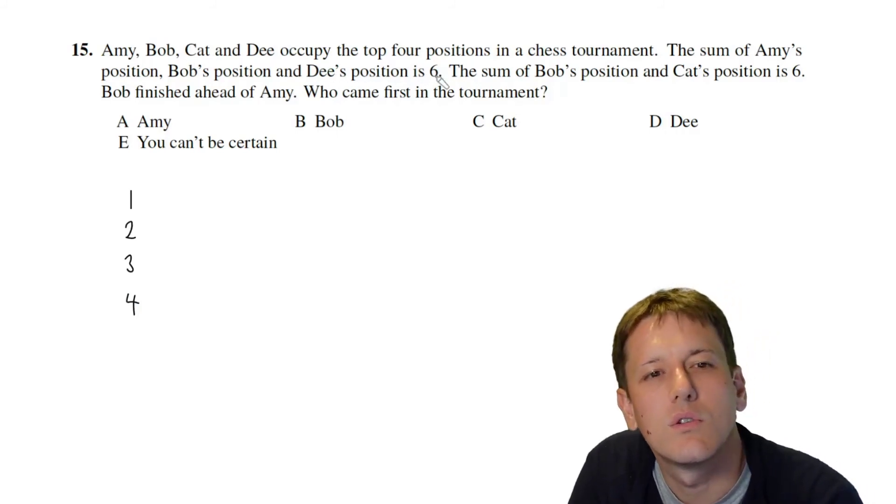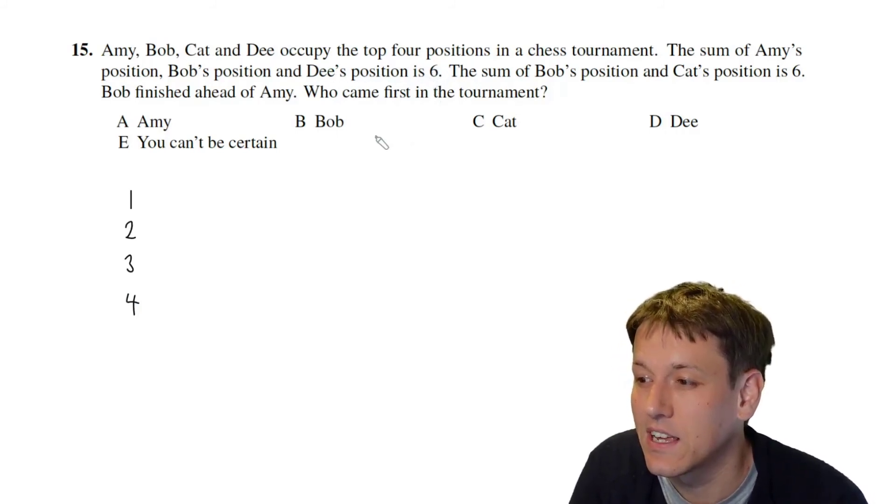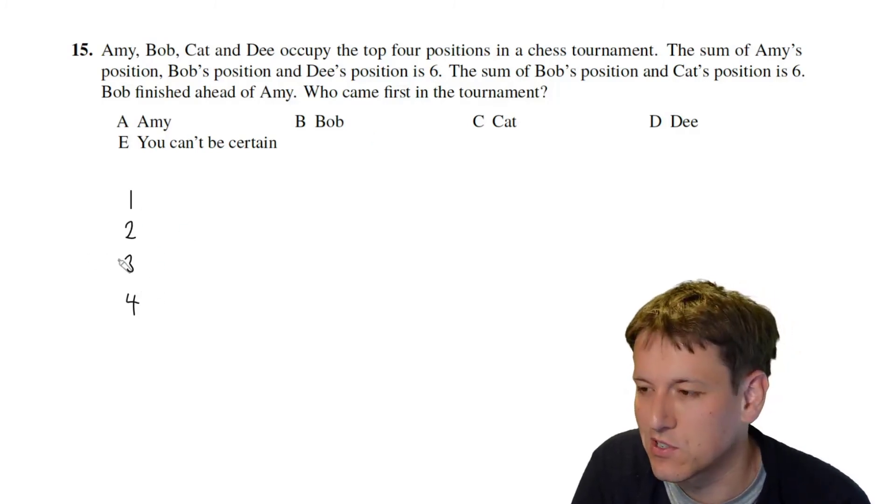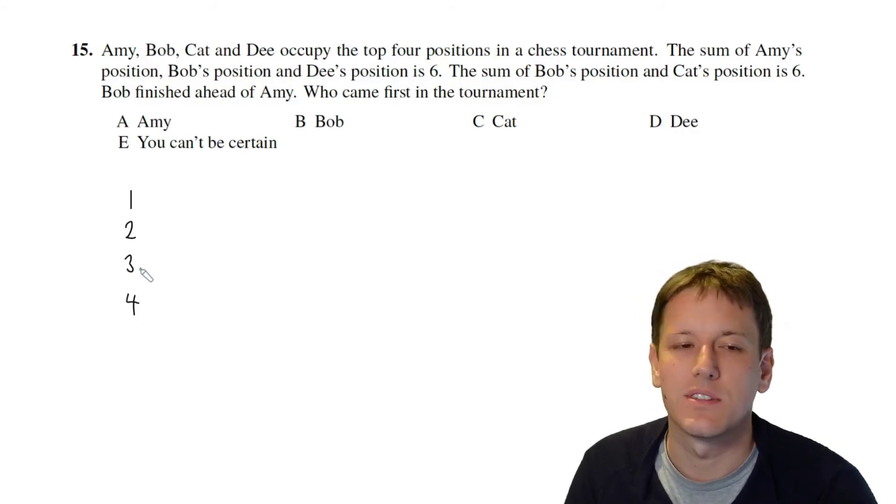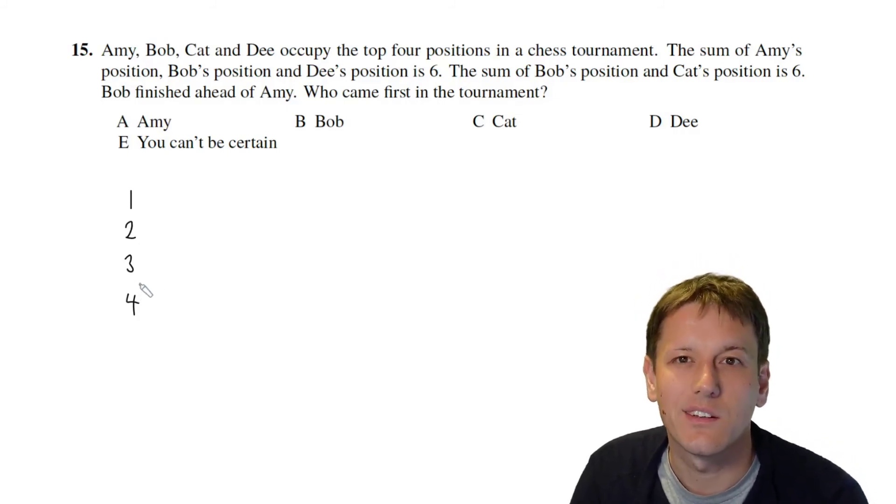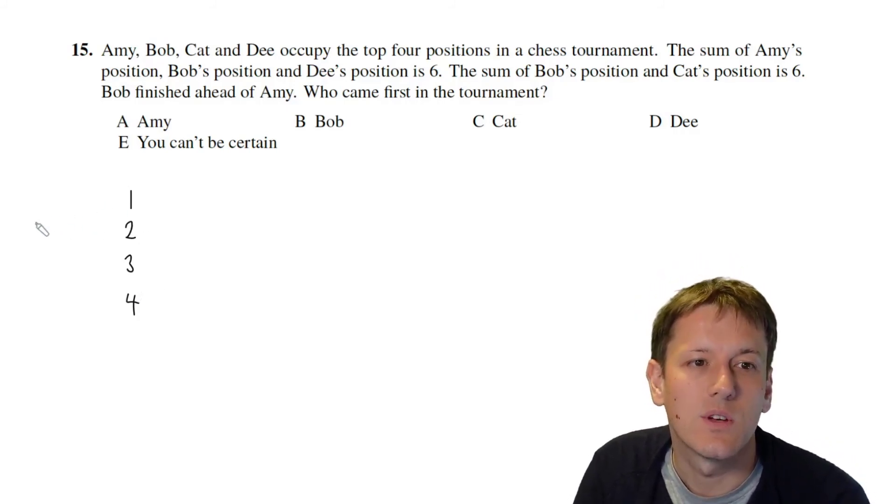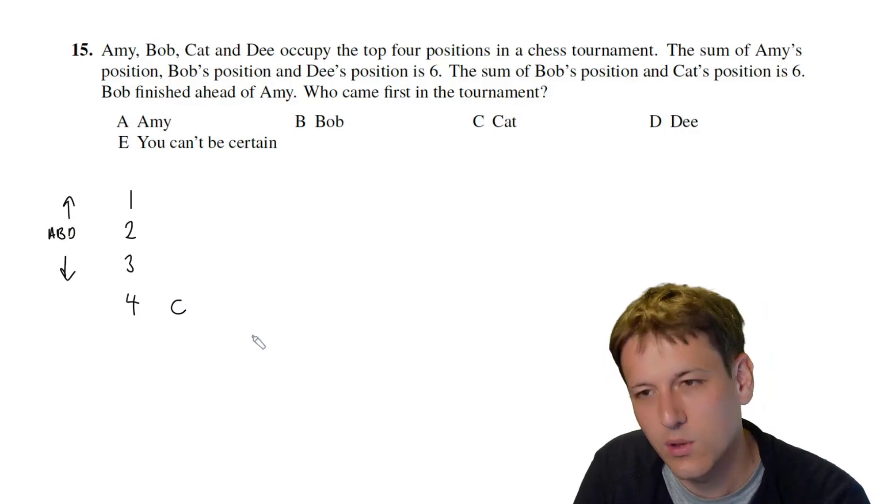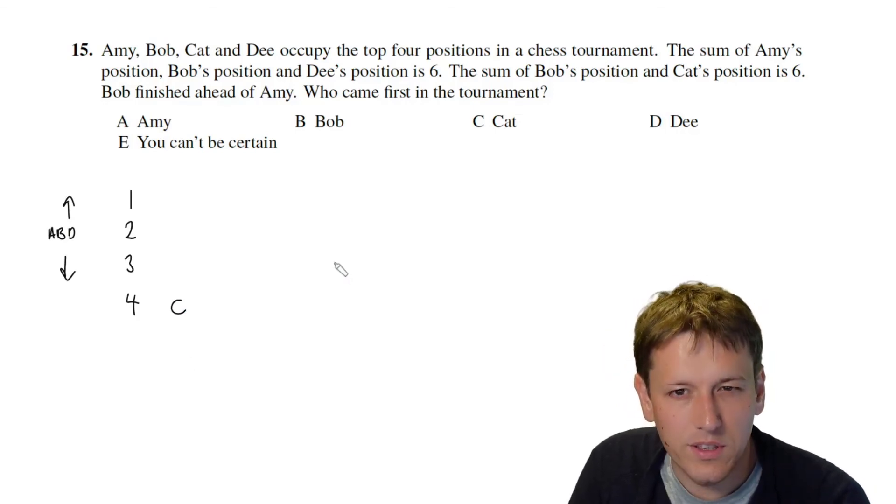So we've got the positions 1, 2, 3 and 4 to fill and A, B and D all positions add together to give 6. Now the only combination of three numbers that add together to give 6 here is 1 plus 2 plus 3. It's the smallest sum of three numbers is 6 so anything that includes the 4 is going to be bigger than 6 so it must be that A, B and D fill up these top slots and so we know that it must be Cat that came fourth in the tournament.